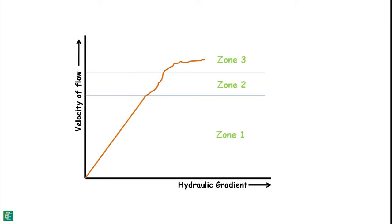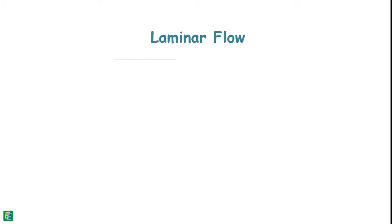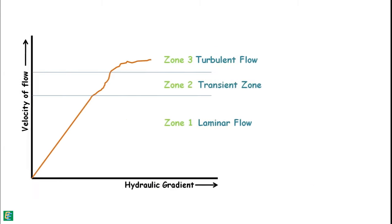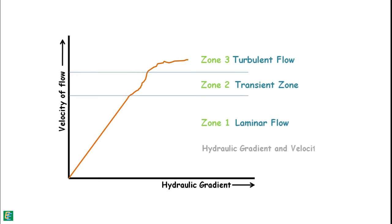Zone 3 where the curve is irregular displays the turbulent flow of water inside the voids. Zone 1 depicts the laminar flow and zone 2 is transition zone. In laminar flow, the particles of water follow a defined path such that the path of one particle never intersects the path of any other particle, while turbulent flow is irregular. We can observe in zone 1, hydraulic gradient and velocity of flow share a linear relationship.